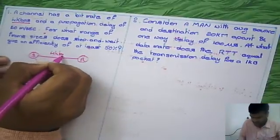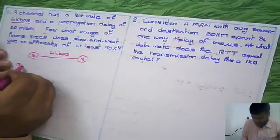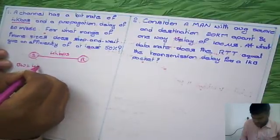4 kbps, right? So the given bandwidth is 4 kbps.